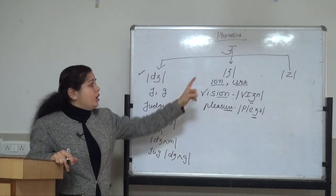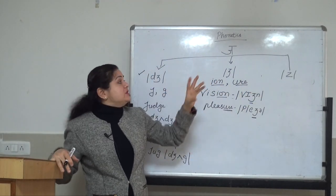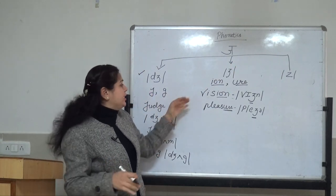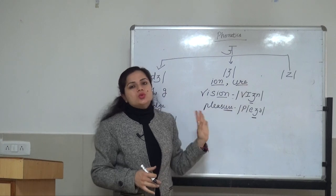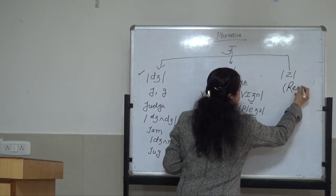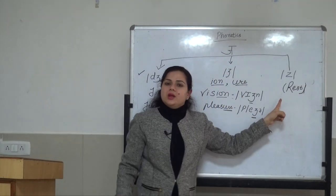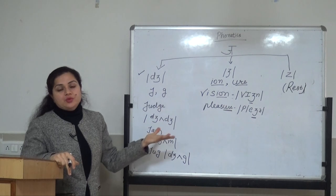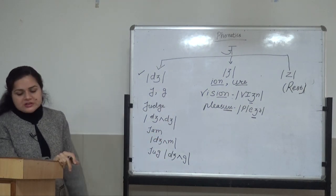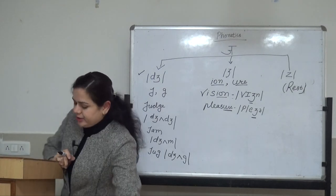The last symbol for /dʒ/ is /z/. So if the sound of /dʒ/ is there but there is no G, no J, no ION, no URE in the spelling — then the rest of the spellings will take this kind of symbol, the /z/ symbol.